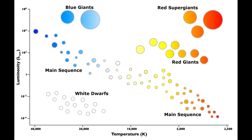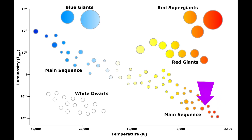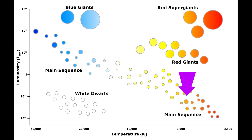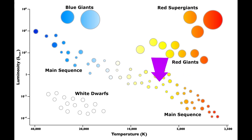On the Hertzsprung-Russell diagram, the lower right shows stars with low electrical stress, low surface current densities, and the plasma is in dark mode. Moving to the left, current density is increasing as the plasma goes from glow mode into arc mode on the photosphere.